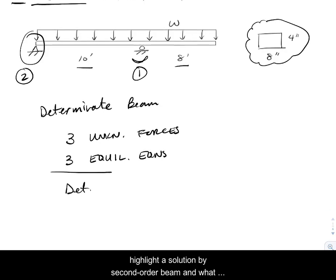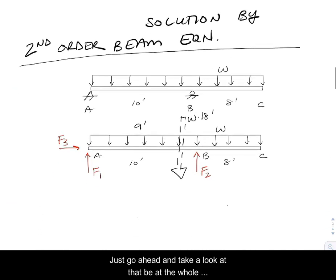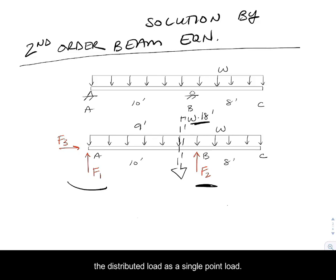What we're going to do is highlight a solution by second order beam equation. Again, what we're going to need is the moment inside the beam. Let's take a look at that beam, at the whole structure free body diagram. At the left end I've got two perpendicular forces F1 and F3, the roller at B represented by force F2, and I'm going to use a statically equivalent representation of the distributed load as a single point load to make the statics easier.